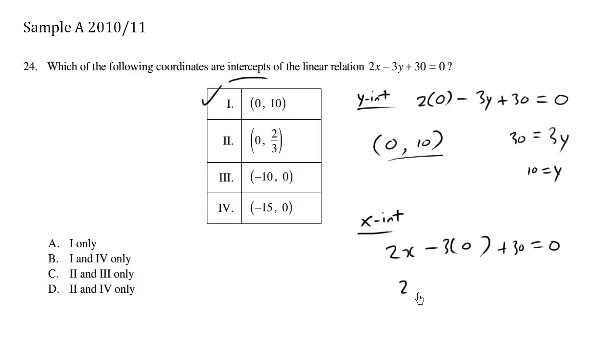So here we have 2x, negative 3 times 0 becomes 0, and the positive 30, when we move it to the other side, it becomes a negative 30, and we're going to divide both sides by 2, which we get negative 15.